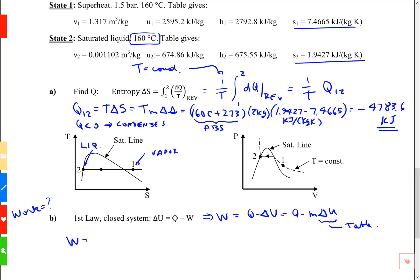So work is going to be the Q value minus 4783.6, that's in kilojoules, minus the mass, 2 kilograms, times the change in internal energy which is going to be u2 minus u1. Here's u2 up there, 674.86 minus u1 which is 2595.2. Again, that's in kilojoules per kilogram. So I multiply by kilograms and I get kilojoules and this works out to be minus 942.93.